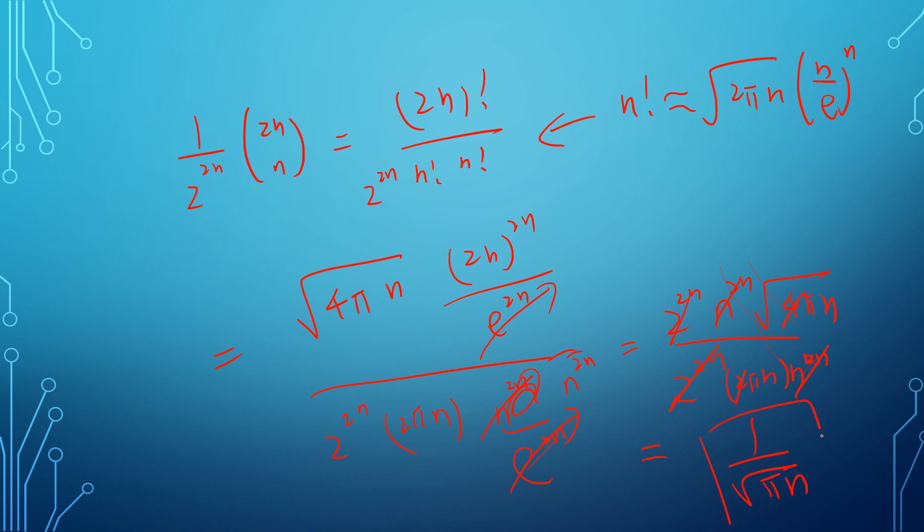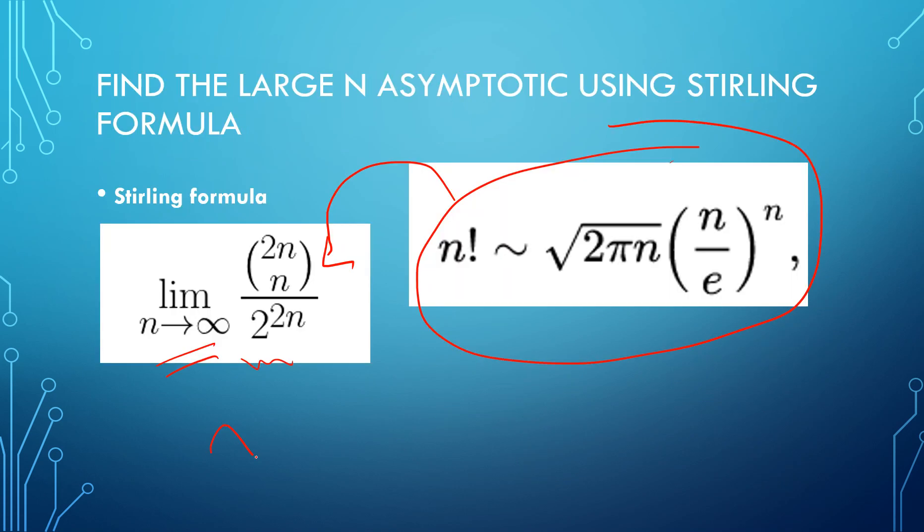So the answer is 1 over square root of pi n. So this is the answer.